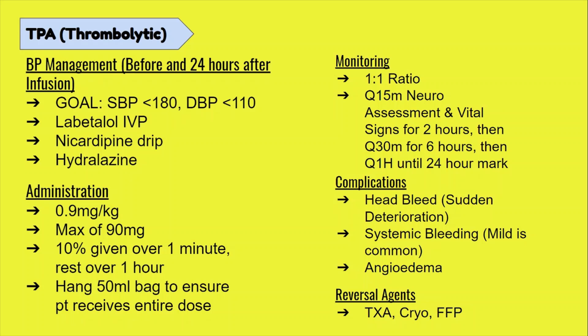Regarding assessments, you'll be doing neuro assessments as discussed, but also keeping a close eye out for sudden changes in mentation, as it can be a sign of a head bleed related to the TPA. You'll also be watching out for systemic bleeding like GI bleeding and for allergic reactions. Do know that mild bleeding is common and expected with TPA. Mild bleeding includes oozing from IV sites or even the gums, and can also manifest as bruising where the BP cuff is.